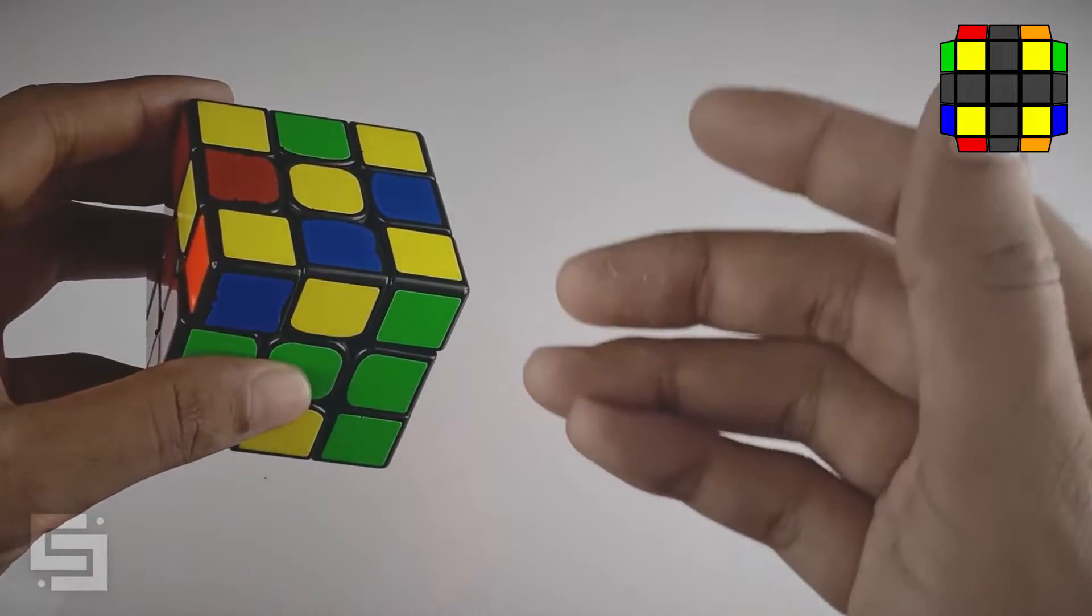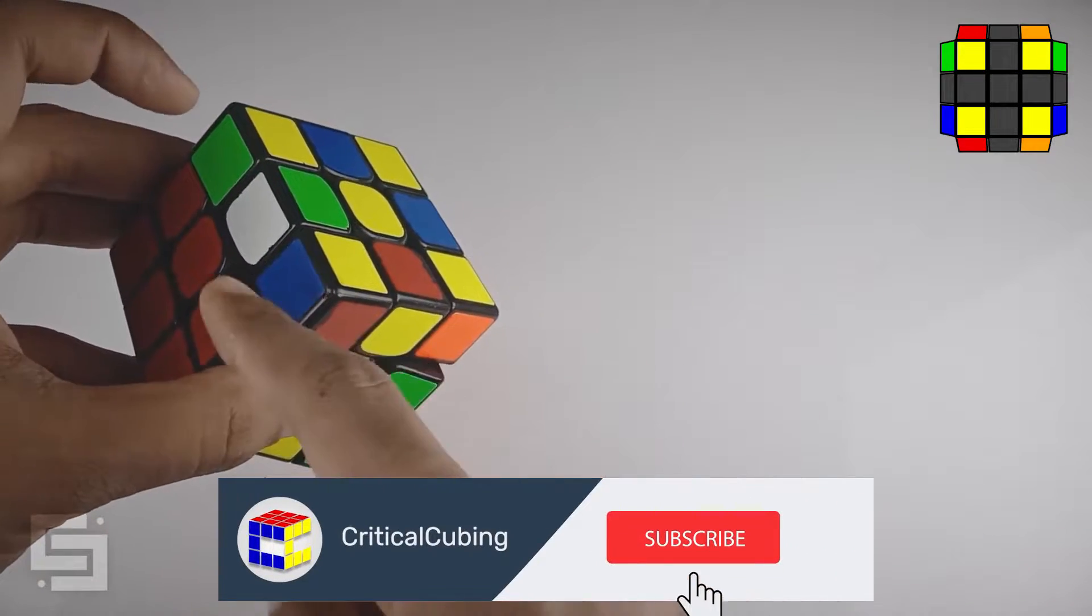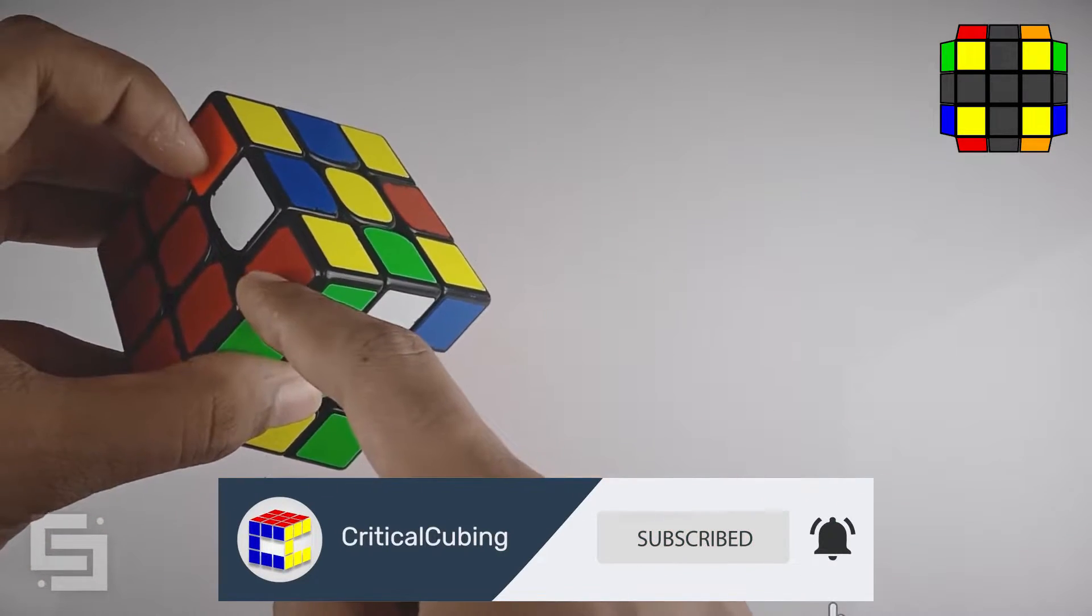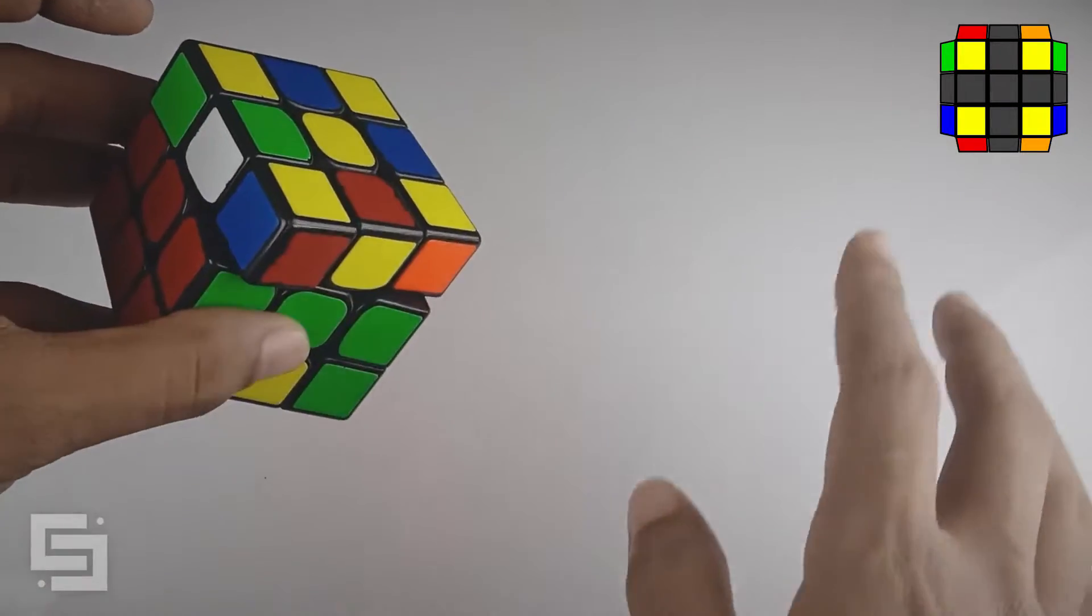The other case is the opposite case and no matter what angle you get this case from, the stickers on the sides will always be opposites like we have in here. Red and orange, blue and green, red and orange, blue and green, always opposites.